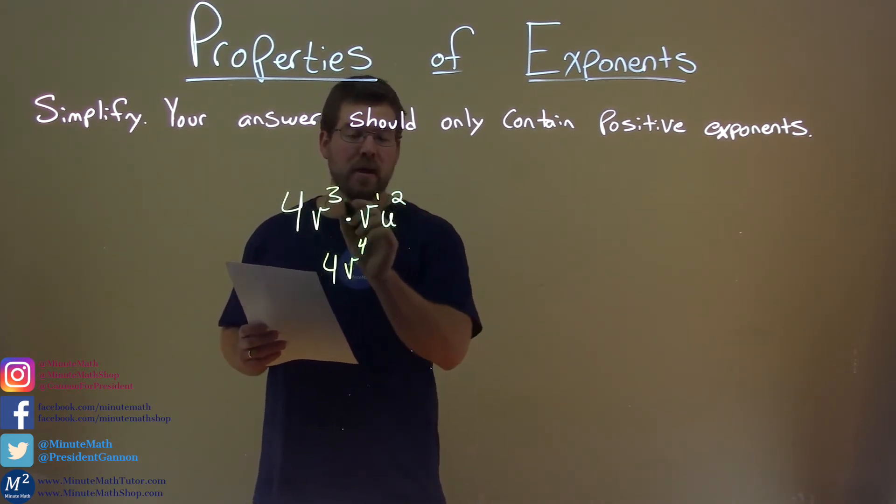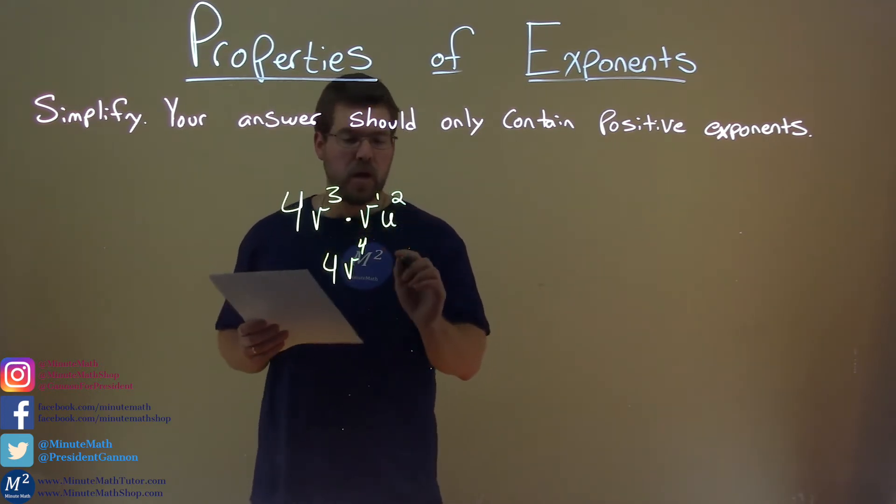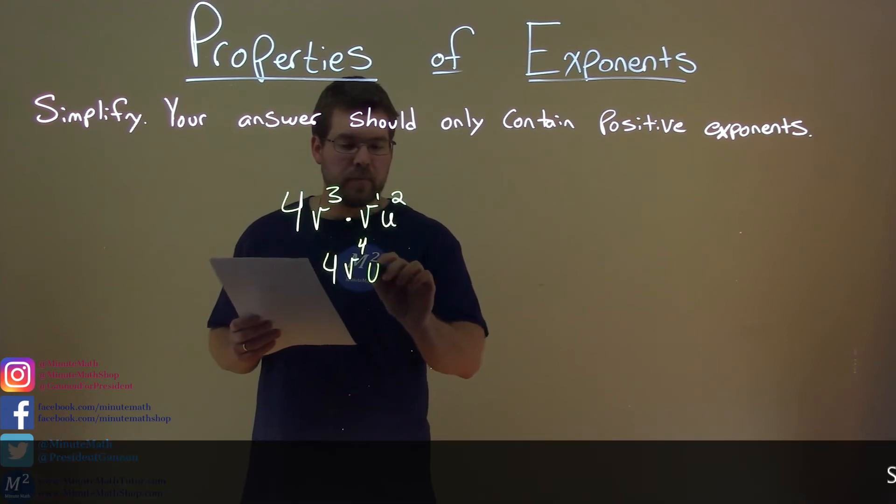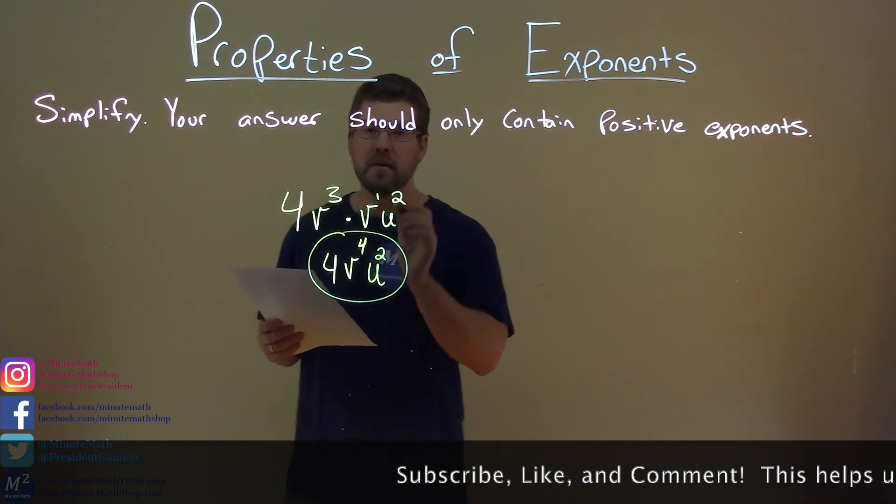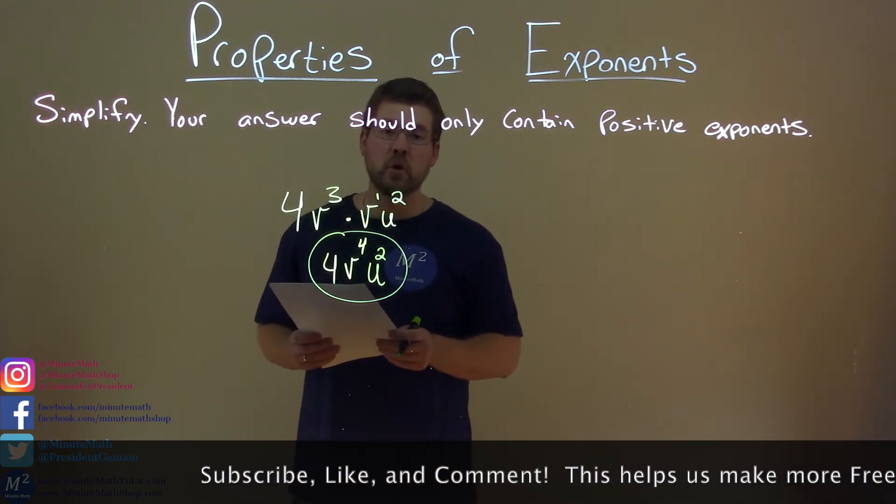Lastly, we have the u squared right here on the right. There's no other u squared on the left. So, we just bring down the u squared, and we're done. Our final answer here is 4v to the fourth power times u squared.